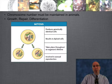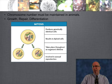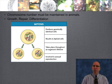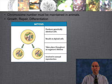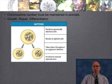Let's compare mitosis and meiosis as far as chromosomes go. In mitosis, chromosome number has to be maintained in animals, plants, and fungi. It happens when cells differentiate — muscle cells, fingernail cells, cheek cells, hair cells — and it's also involved in repair and growth. Mitosis produces genetically identical cells, results in diploid (2N) cells, happens all the time, and is a form of asexual reproduction, meaning there's no exchange of genes.